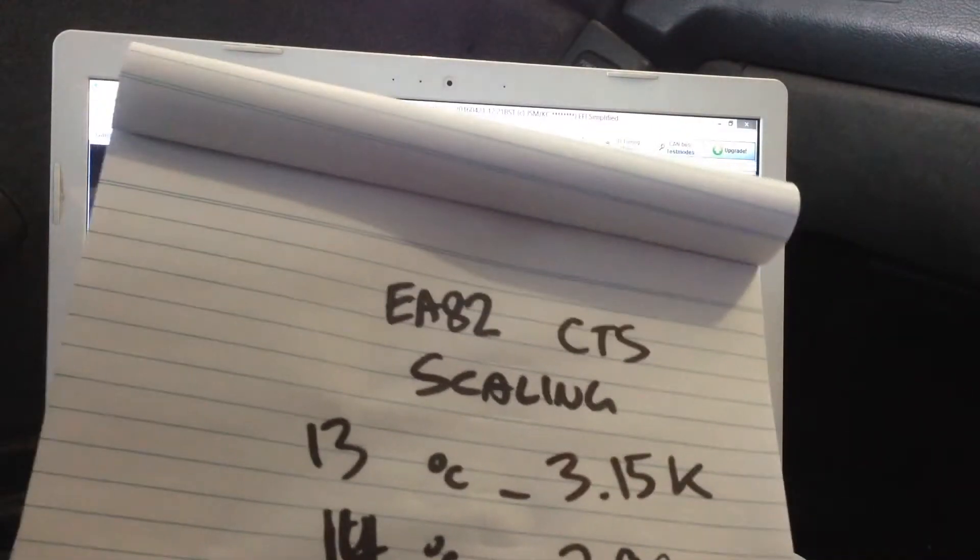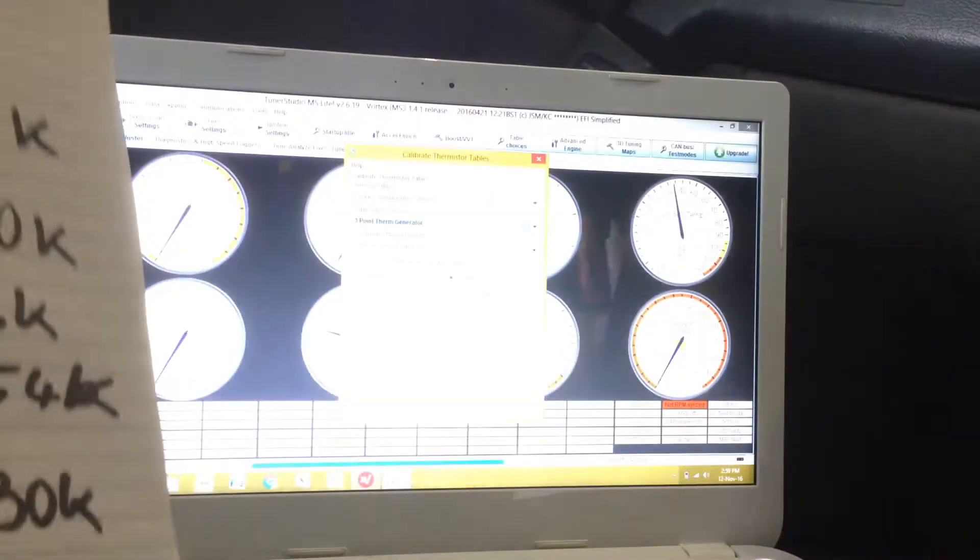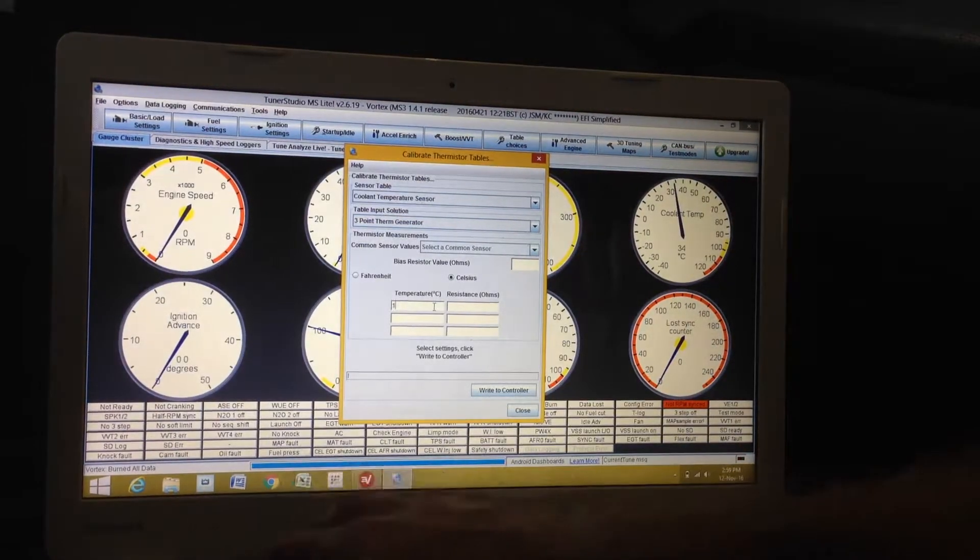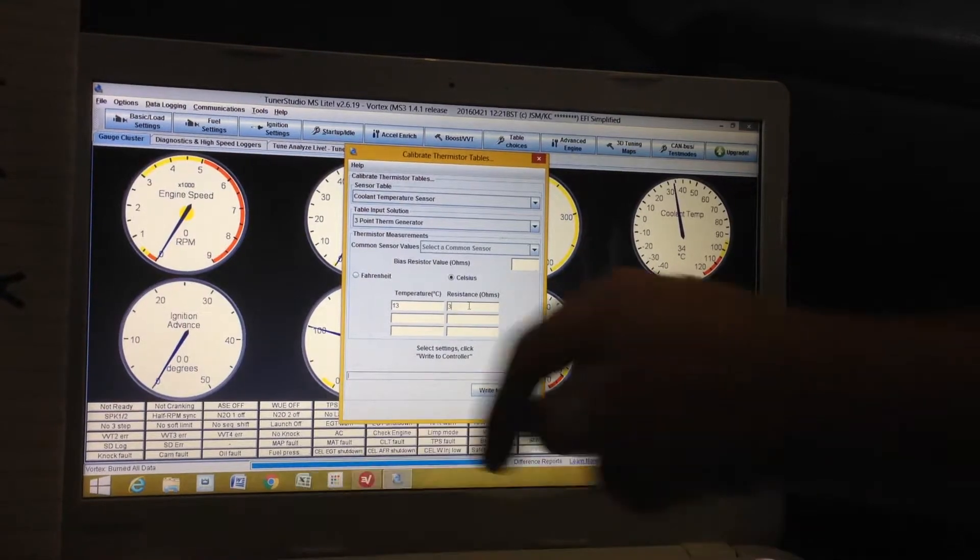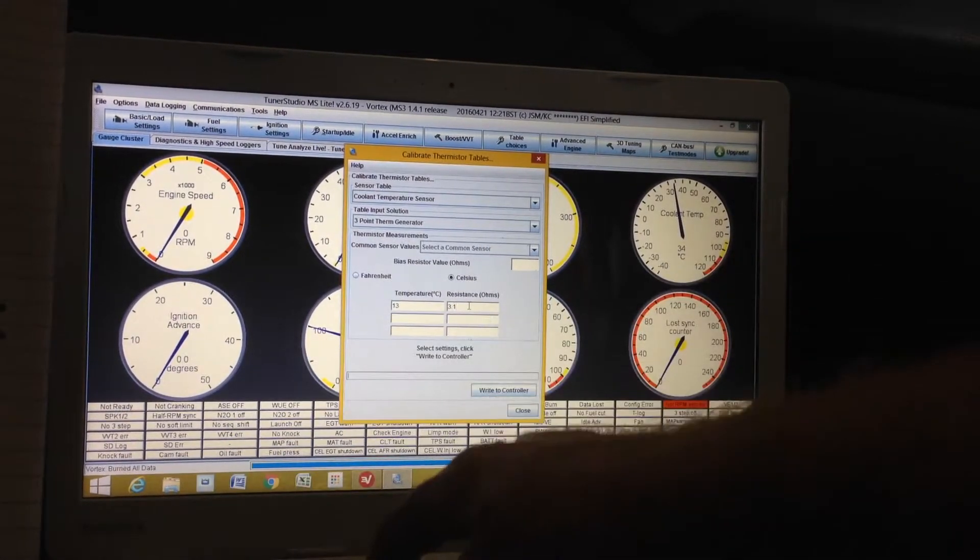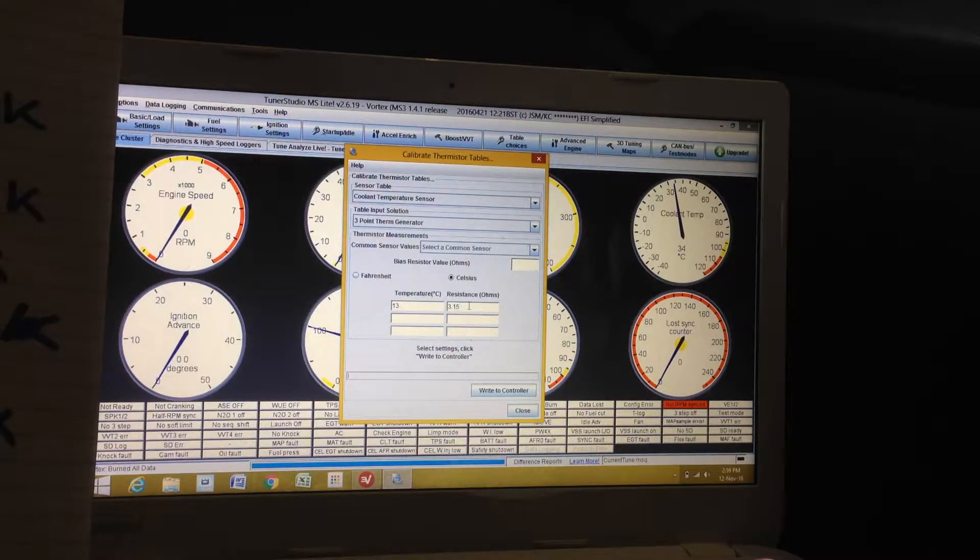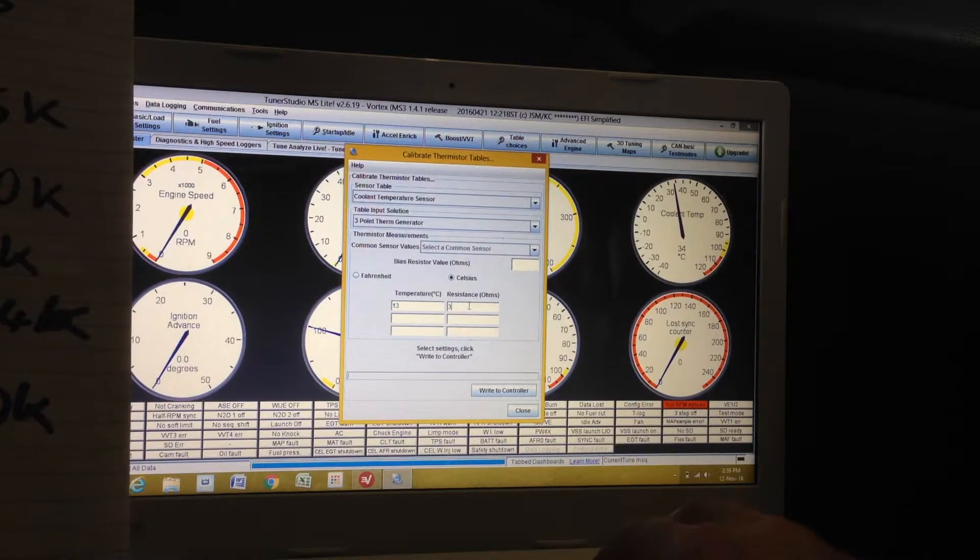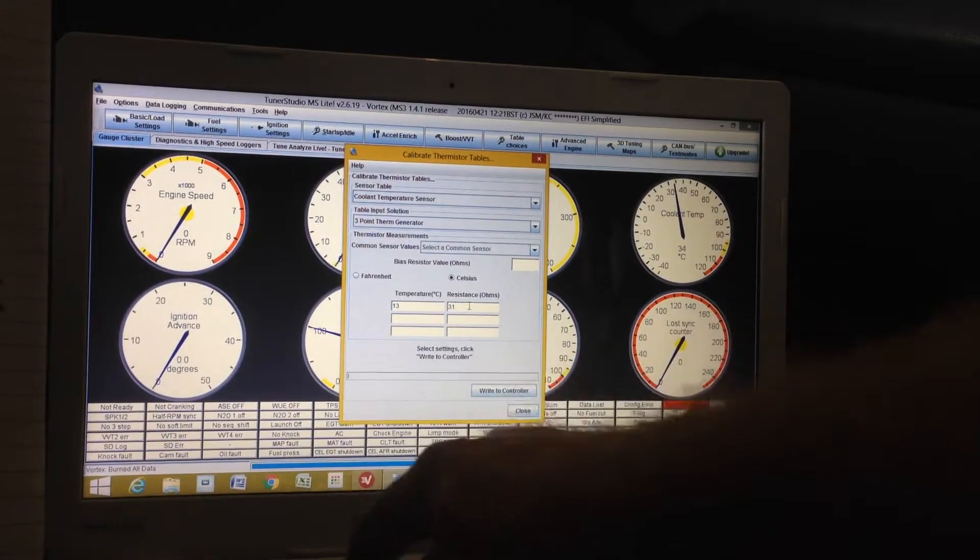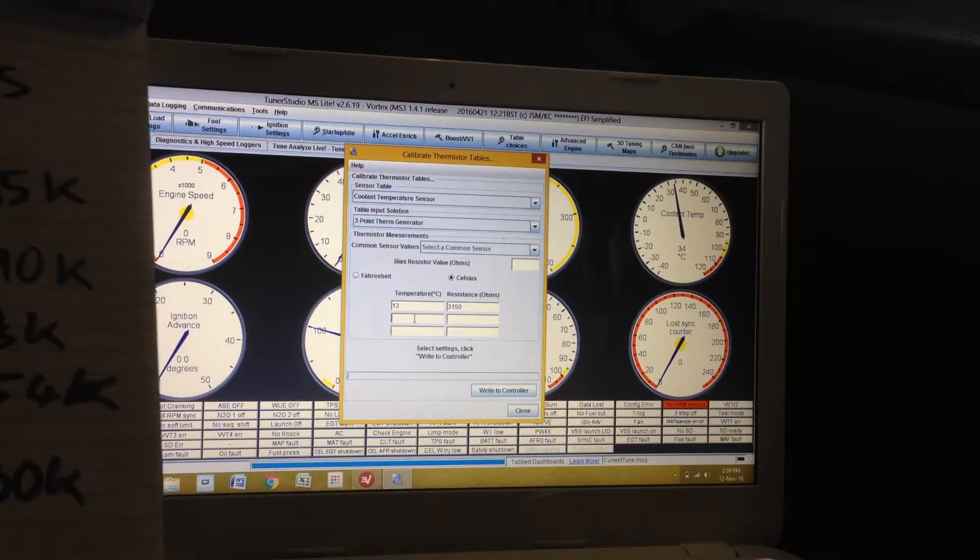Now, so we need to pick some values now, so I'm going to go the lowest. So, temperature at 13. Resistance in ohms is 3.15 K. Okay, 3.15 K, so 3,150. 3,150 ohms.